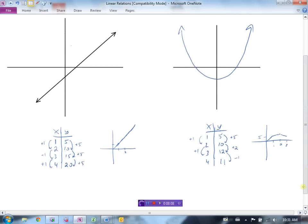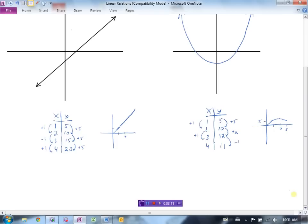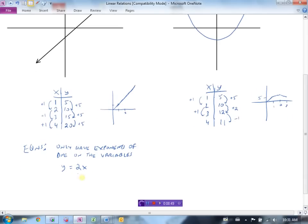So that's how we can tell from a graph and from a table of values if they're linear or they're non-linear. Now, what about the equation? Well in an equation, if we're going to look at the different equations, linear equations only have exponents of 1 on the variables. So I'll give you some examples. For instance, y equals 2x. The exponent is only 1 on the y and x. You could go 3x minus 2y equals 7. That's fine. That's linear. You could even just have y equals 3. Those are all examples of linear equations.